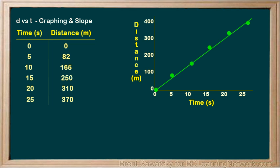One of the key characteristics of any graph is its slope. So, what does the slope of a D versus T graph represent? Let's try and think this out a bit.